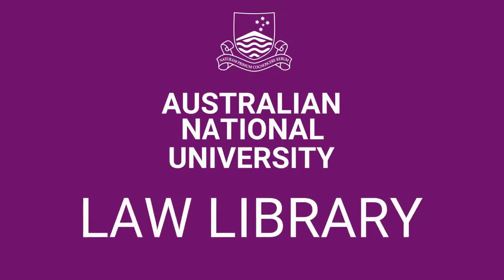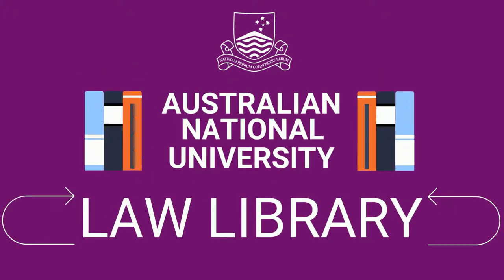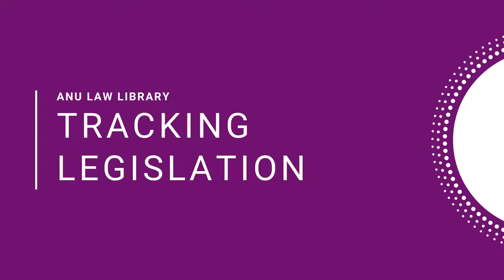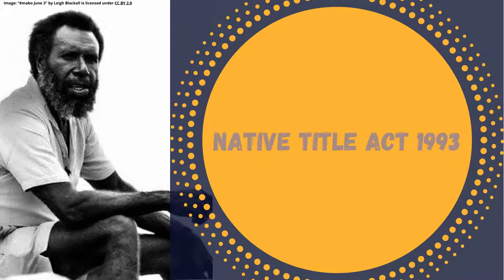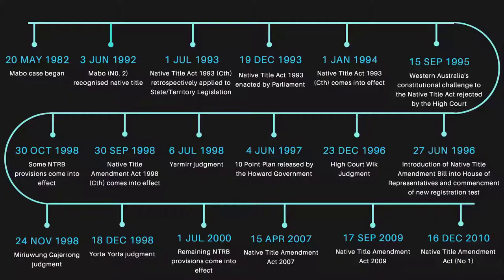This is the Australian National University Law Library. This video looks at how changes to a piece of legislation can be traced over time, and how to find related bills and explanatory memoranda for an Act. We will look at the Native Title Act 1993 as an example and how this Act was most significantly amended by the Native Title Amendment Act 1998, a piece of legislation that has had a complicated history.